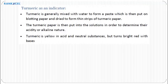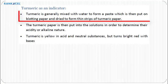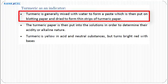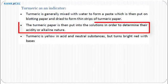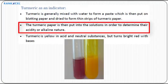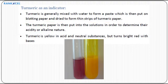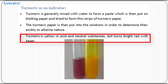Turmeric as an indicator: Turmeric is generally mixed with water to form a paste, which is then put on blotting paper and dried to form thin strips of turmeric paper. The turmeric paper is then put into solutions in order to determine their acidity or alkaline nature. Turmeric is yellow in acidic and neutral substances but turns bright red with bases.